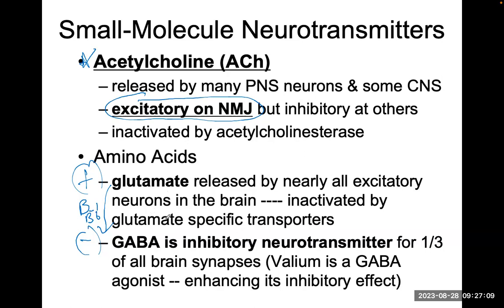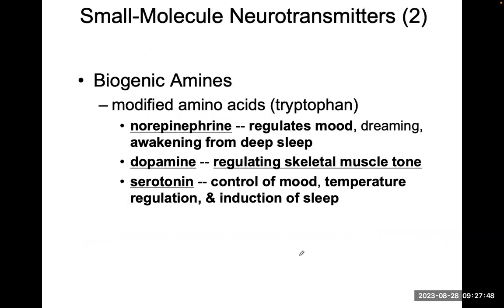There are some people who have imbalances where they're glutamate dominant at night, meaning they can't sleep because their brain is wired with information. And then there are people who are GABA dominant in the morning — when they get up, they're constantly hitting the snooze button. GABA is an inhibitory neurotransmitter. Some people use Valium or Valerian root, which is a GABA agonist that enhances its inhibitory effect. Some people use Valium on an airplane to relax — so they're a little tired, sleepy, and less anxious. These neurotransmitters are very important.